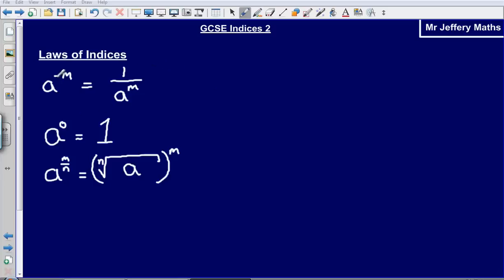First one is a to the negative m. If we have this situation, we take the reciprocal and so it becomes 1 over a to the m. A to the power of 0, anything to the power of 0 is going to give us 1. And lastly, a to the power of m over n is going to give us the nth root of a raised to the power of m. That looks quite confusing, we'll talk about that in a bit more detail in just a second.